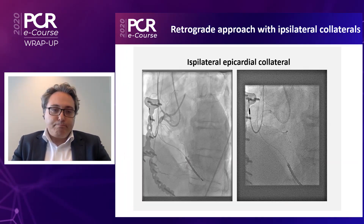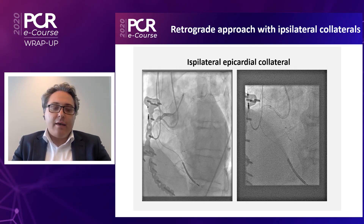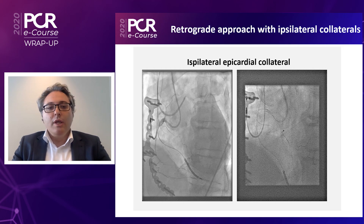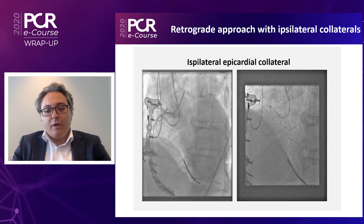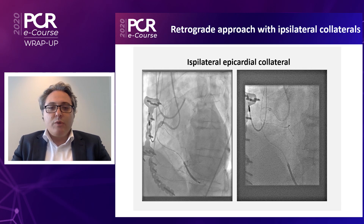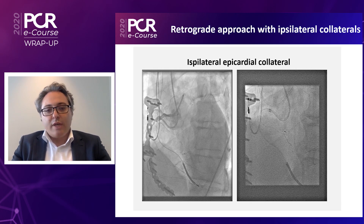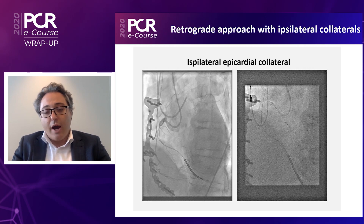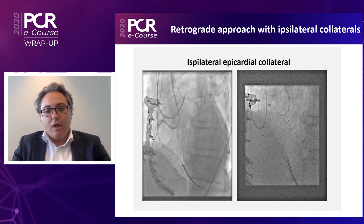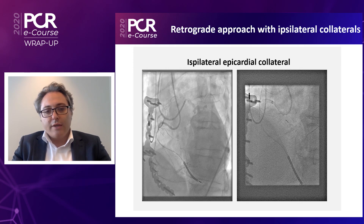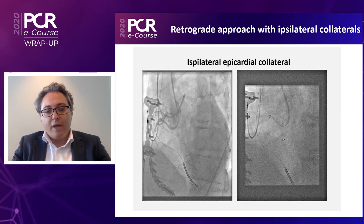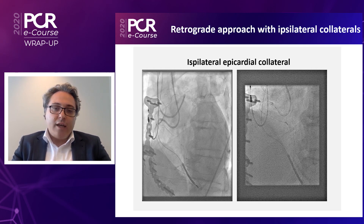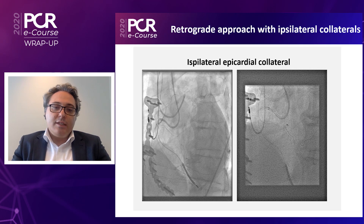As you can see here, there is an epicardial vessel — very tortuous and small — coming from the proximal right to the distal right. We tried to navigate it, and we succeeded with a dedicated wire for epicardial use, the Suoh 03, and a Caravan microcatheter. We were able to navigate this micro channel and reach the distal right coronary artery.